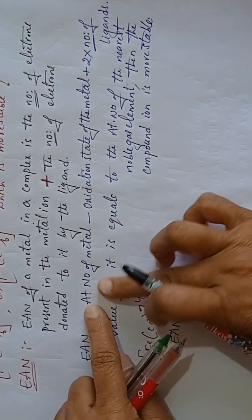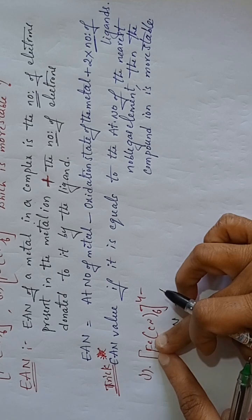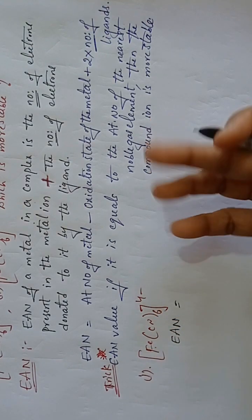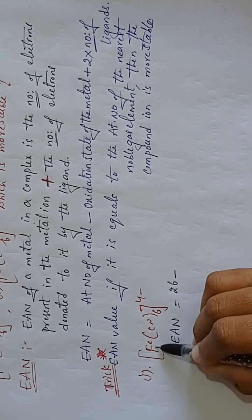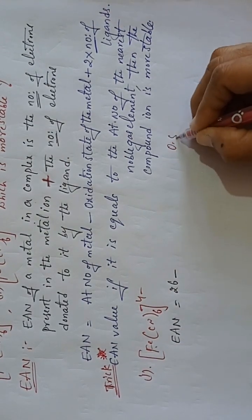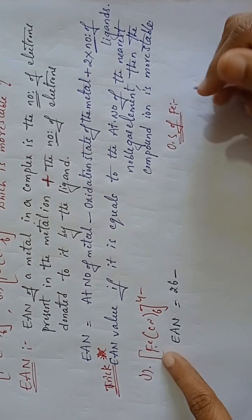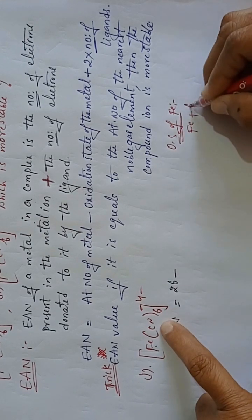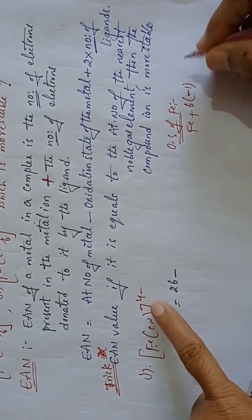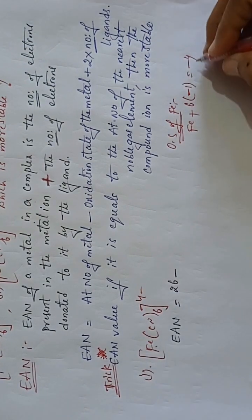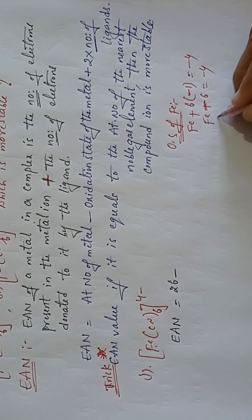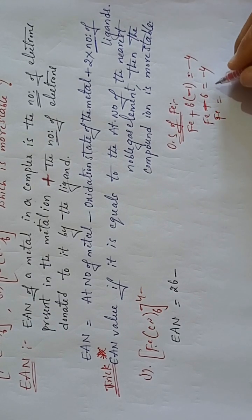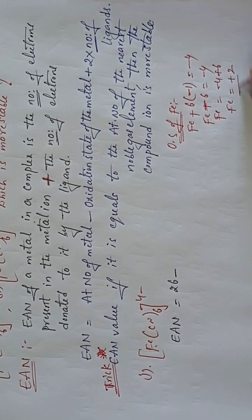So EAN = 26 minus oxidation state of iron. To find the oxidation state: Fe + 6×(CN⁻) = −4. So Fe − 6 = −4, therefore Fe = −4 + 6 = +2. The oxidation number of iron is +2.